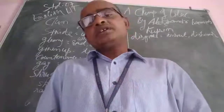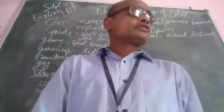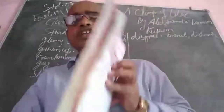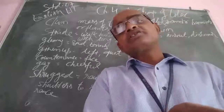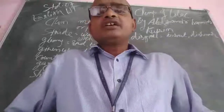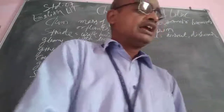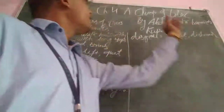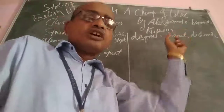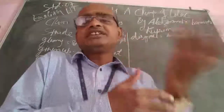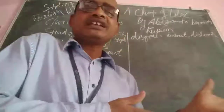Today we will do a new chapter — Chapter 4 from Fragrance English Reader, and that is 'A Clump of Lilac.' This story is written by a Russian writer. His full name is Alexander Ivanovich Kuprin. As he is a Russian writer, the setting of the story is Russia only, and all the characters are Russian only.